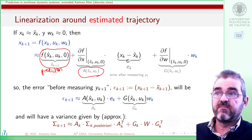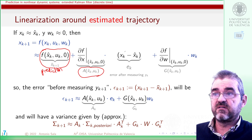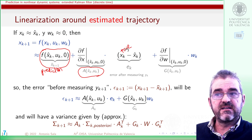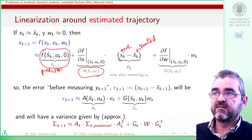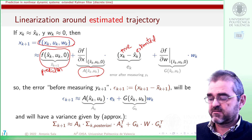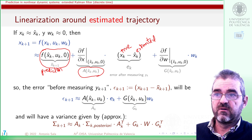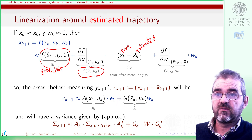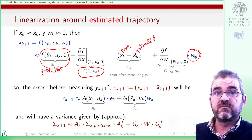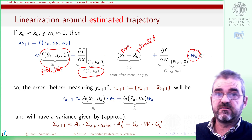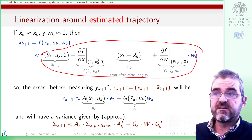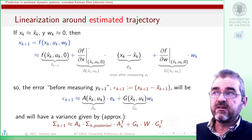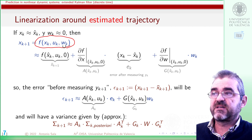Then this Jacobian multiplied by the increment — the difference between the true state and the estimated state — will be one further step in approximating this. And of course the same Jacobian with respect to the process noise, multiplied by the increment of the actual noise minus zero (the expected value of it), will give the linearized approximation of the true dynamics.